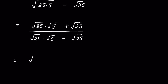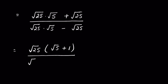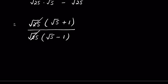Now we can take square root of 25 common in the numerator, giving square root of 5 plus 1, and square root of 25 common in the denominator, giving square root of 5 minus 1. We can then cancel these two like factors.